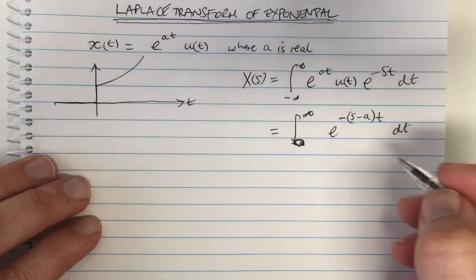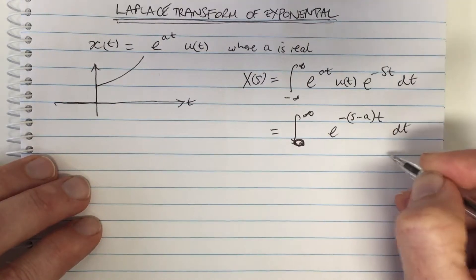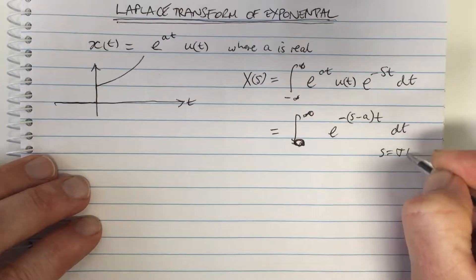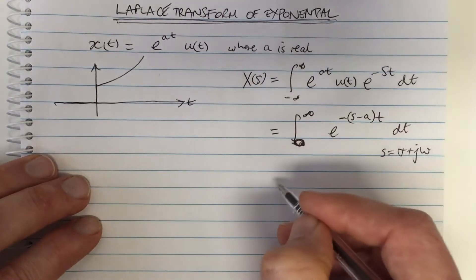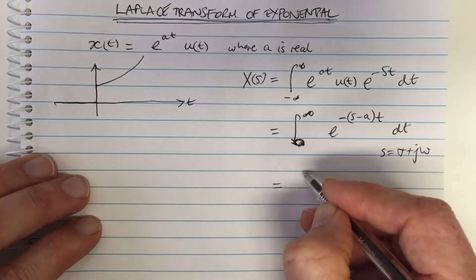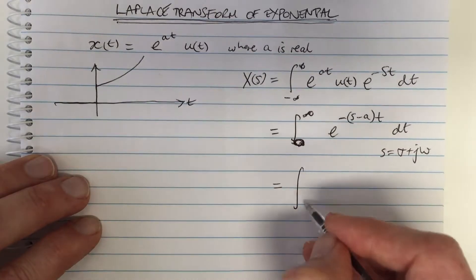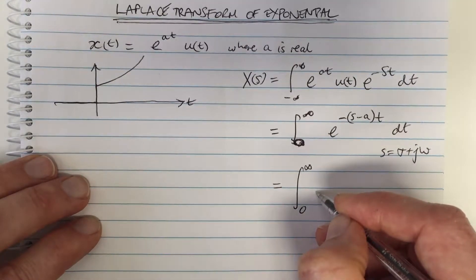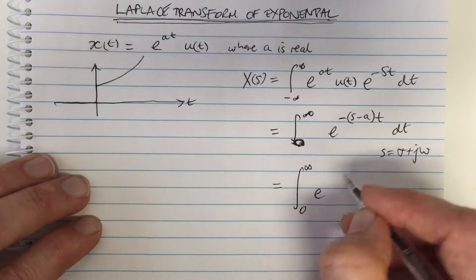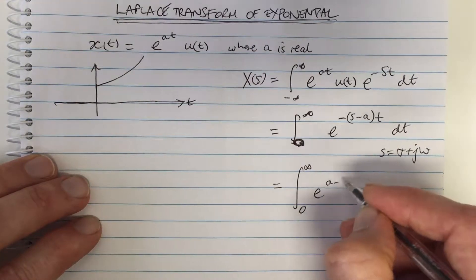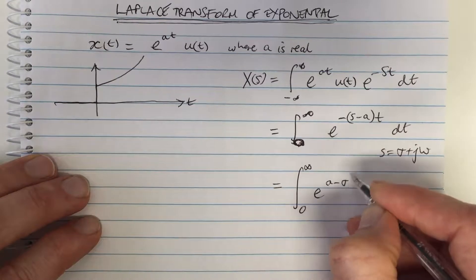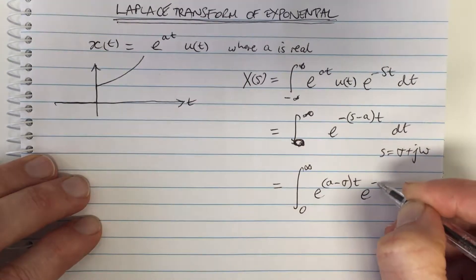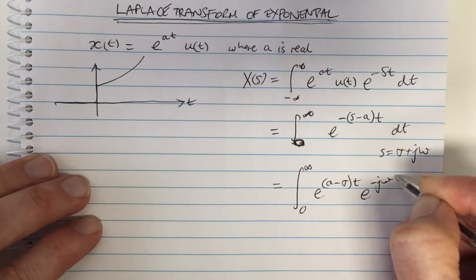It's worth writing this out to show the connection to the Fourier transform. Don't forget s equals σ + jω. So another way of looking at this integral from zero to infinity is e^((a−σ)t) times e^(−jωt) dt.